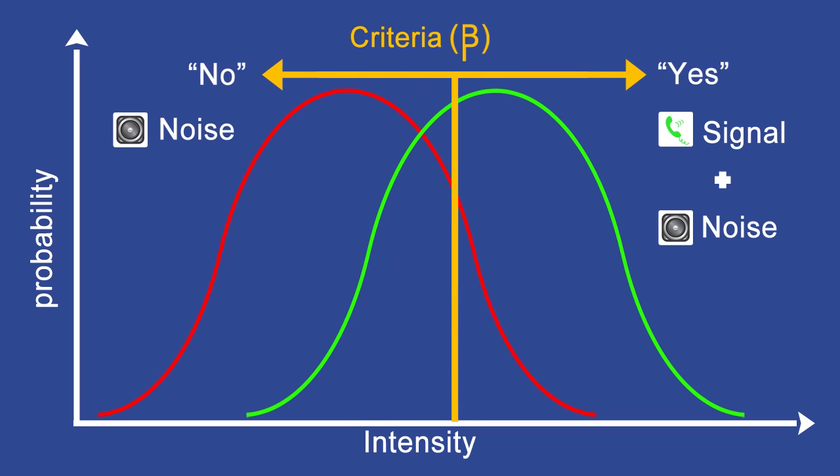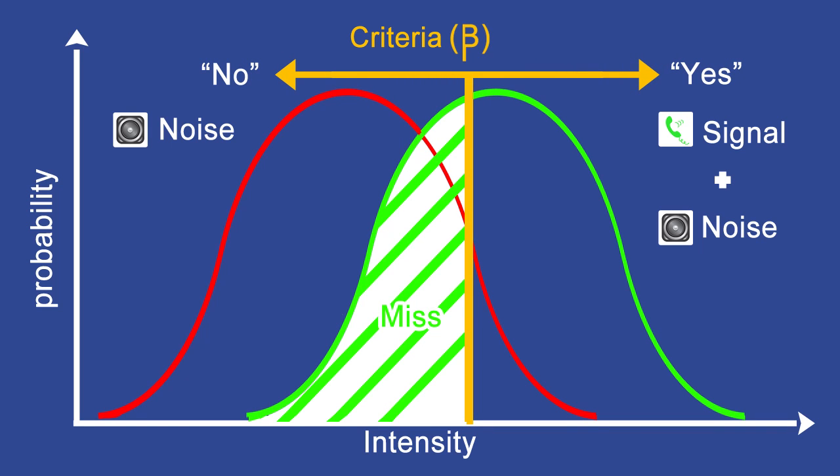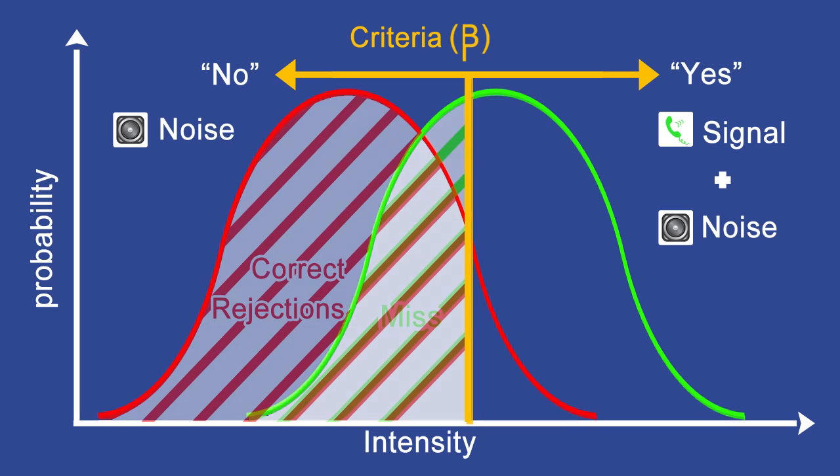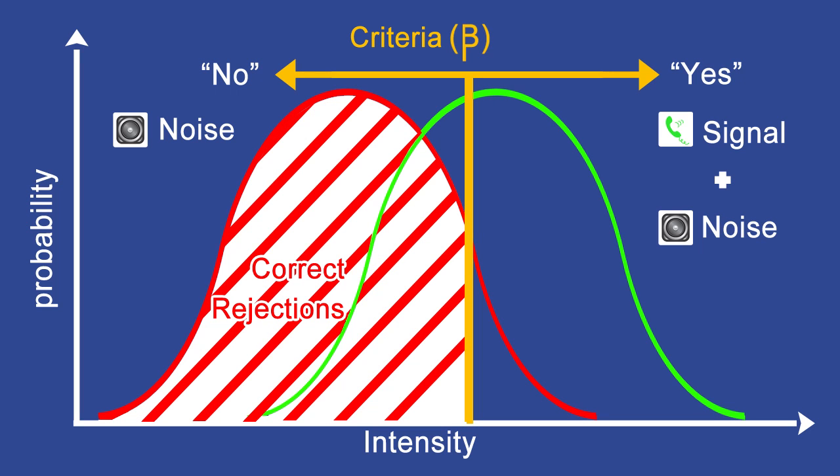We can note that the beta is moving to the right, and thus we have more miss, more correct rejections, and less responses to the right of the line.